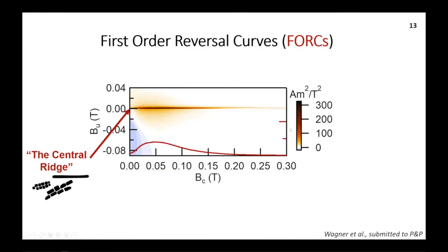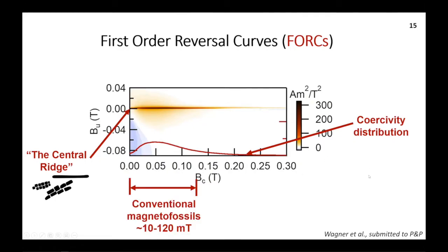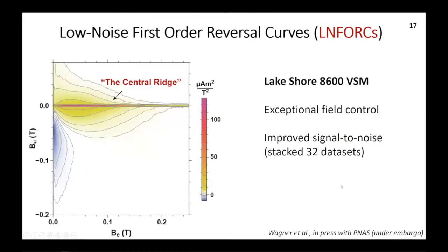One of the most distinguishing features of magnetofossils in FORC diagrams is the central ridge feature — a distinct ridge-like feature at approximately where B_U equals zero — usually accompanied by a negative region in the lower left of the FORC diagram. In sediments like ours, this can be a fingerprint of magnetofossils. Taking a cross-section across the central ridge gives a coercivity distribution. There's a clear contribution over the range for conventional magnetofossils, from about 10 to 120 mT. But interestingly, there's also a high coercivity component to the central ridge, and when we first saw this, we were unsure if it was real or what it could be related to.